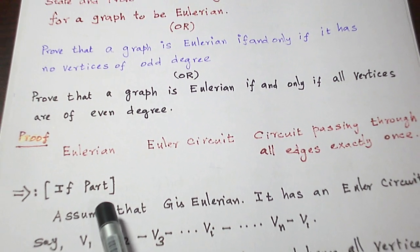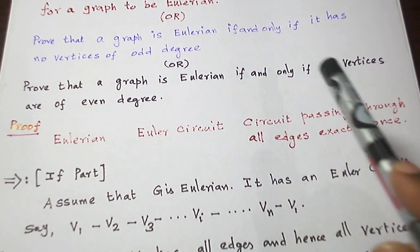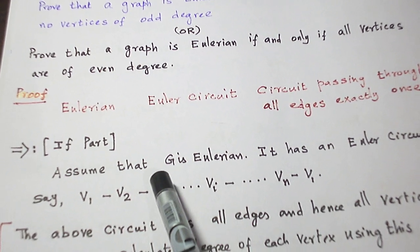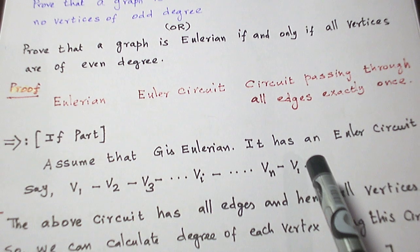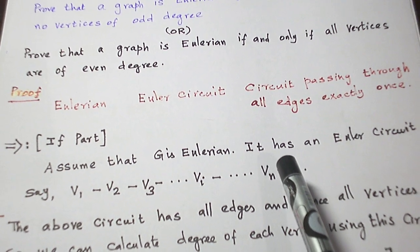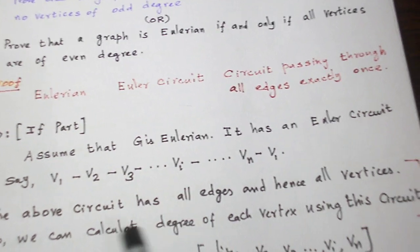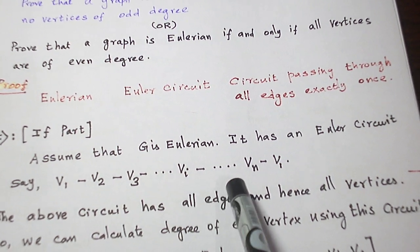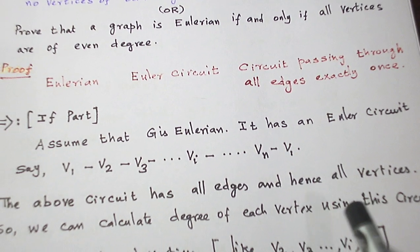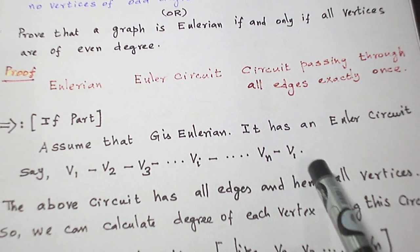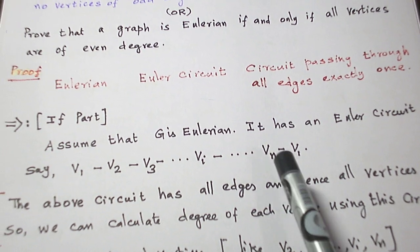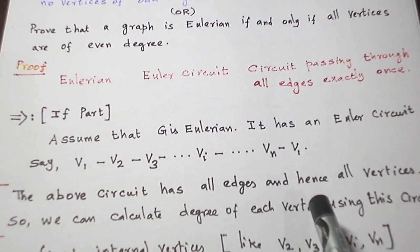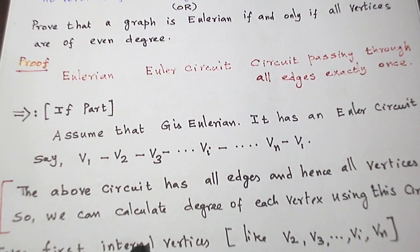First of all, let us prove the if part. That is, assume the graph is Eulerian and prove that all the vertices are of even degree. Assume that G is Eulerian. Once I say it is Eulerian, it has an Euler circuit. Let me take that circuit as V1, V2, V3, ... Vi, ... Vn to V1. Now this circuit is Eulerian, so it has all the edges exactly once, and hence it has all the vertices of the graph.